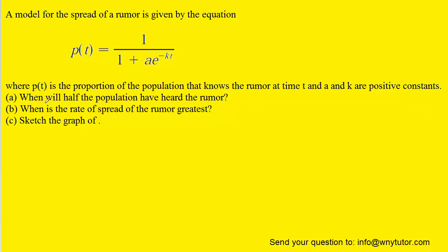In part a, in order to solve for when half the population will have heard the rumor, we just have to recognize that the question is essentially telling us that p(t) is going to equal 0.5. That's just another way of saying that the proportion of individuals who have heard the rumor is equal to half of the entire population.